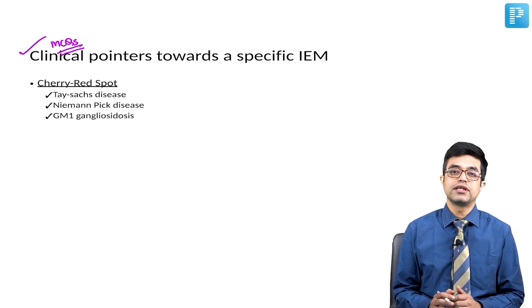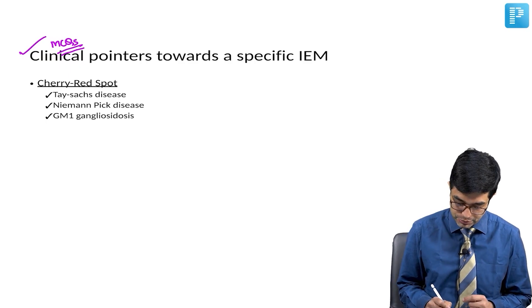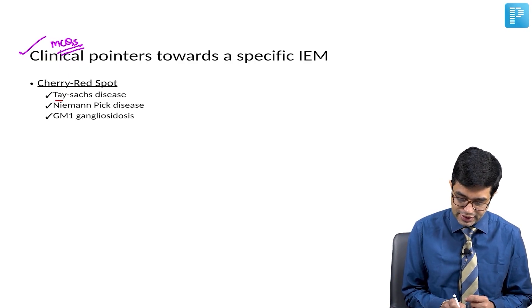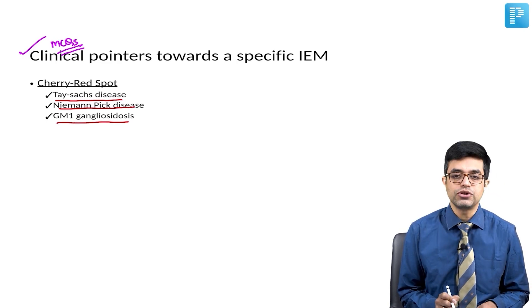First is cherry red spot. What are the conditions in which cherry red spot are seen? There are three conditions that you should remember. Cherry red spot is seen in Tay-Sachs disease, it is seen in Niemann-Pick disease, and it is seen in GM1 gangliosidosis.